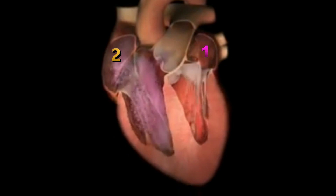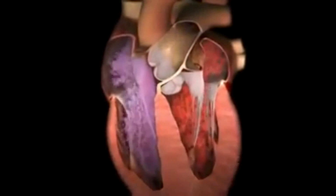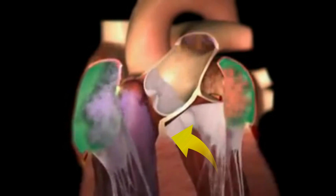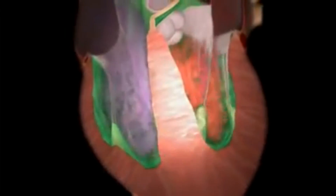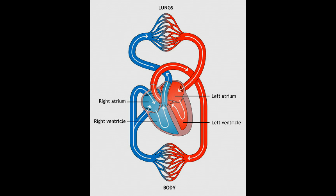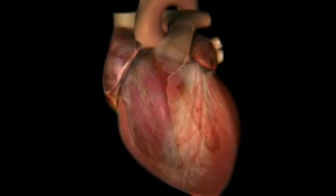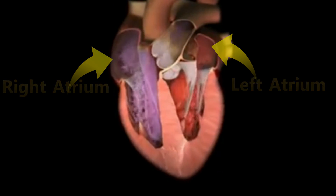If the heart is cut open vertically, it can be seen to contain four chambers. The two chambers on the left are completely separated from those on the right by a wall of muscle called the septum — blood cannot pass through it. The only way for blood to get from one side of the heart to the other is to leave the heart, circulate around either the lungs or the rest of the body, and then return to the heart.